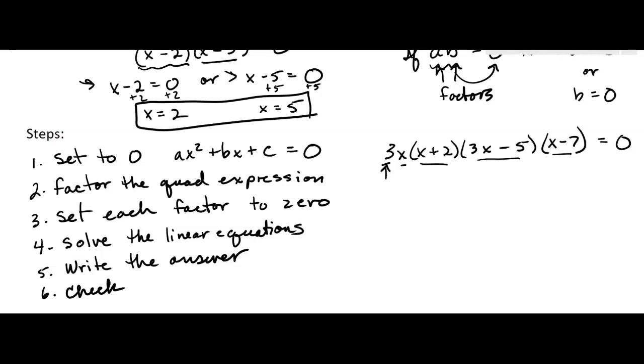Can 3 be zero? No, so no solution there. But x could be zero. That would be one solution. Here, x could be negative 2. That would make that factor zero. Here, x could be 5 thirds. So that would be another solution. And here, x could be 7.